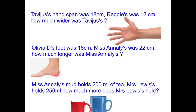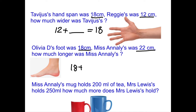These types of questions are called 'find the difference' questions, and they're ones that often appear in tests that people find quite tricky. The first one says Tavius's hand span was 18 centimetres and Reggie's was 12 centimetres. How much wider was Tavius's? You're finding the difference between Reggie's and Tavius's — you need to find out how many you have to add to 12 to get to 18. Olivia D's foot was 18 centimetres, Miss Annelise's was 22 centimetres. How much longer was Miss Annelise's? It's the same — find the difference: what do you have to add to 18 to get up to 22?